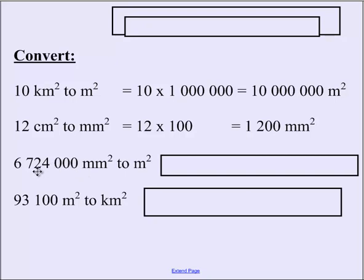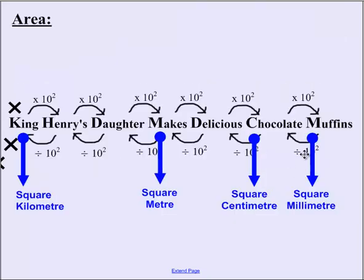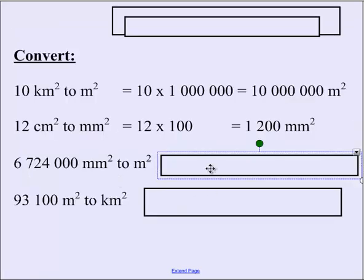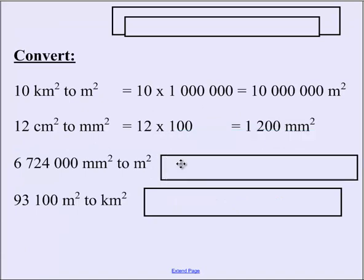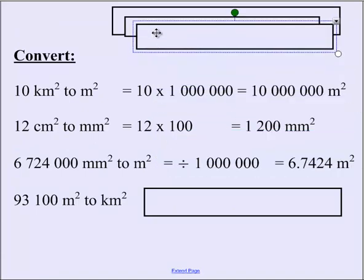This one here, 6,724,000 millimetres squared, and we're converting it to metres. So we're going from a small measurement to a large one, which means our number is going to get smaller. And having a look at what's required, we're going from millimetres, so that's two zeros, four zeros, six zeros to get to the metres, which means that we are dividing by six zeros, or one million. And that takes our decimal point back six places, so it takes it back three to skip all those, and another three to get in between the six and the seven there. We don't need to write the zeros on the end of a decimal, we just need the 6.7424 metres squared.